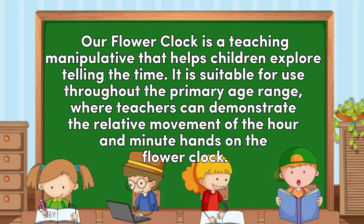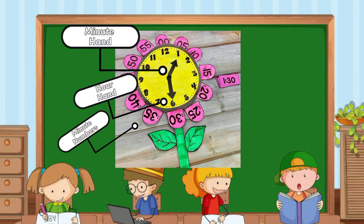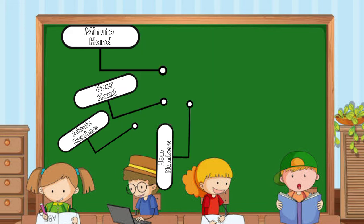Our flower clock is a teaching manipulative that helps children explore telling the time. It is suitable for use throughout the primary age range, where teachers can demonstrate the relative movement of the hour and minute hands. The flower clock has 4 parts: the minute hand, hour hand, minute numbers, and hour numbers.